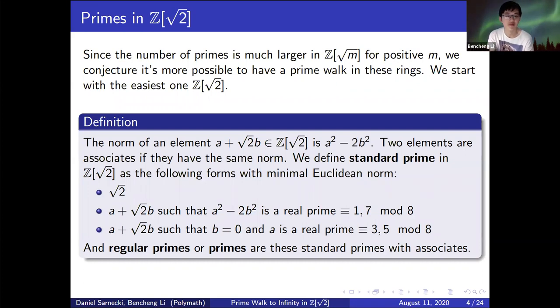Here is a bunch of definitions for the project. The norm of an element a + √2·b is a² - 2b². We've got two elements associated with the same norm. We define the standard prime in Z[√2] as the following forms with minimal Euclidean norm. The first kind is √2, or it's of the form a + √2·b such that its norm is a real prime congruent to 1 or 7 mod 8, or it's a + √2·b such that b is 0, so it's just a real prime equals 3 or 5 mod 8.